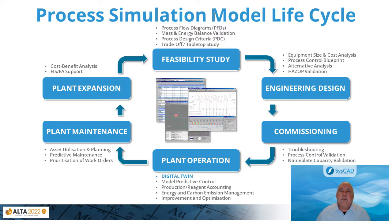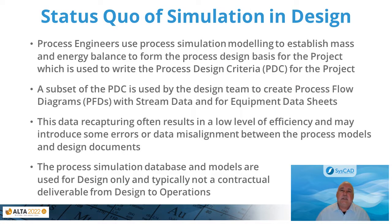For this presentation, we will group the process simulation lifecycle phases into design and operations. The status quo of simulation in design: process engineers use process simulation modeling to establish mass and energy balance, which is used to write the process design criteria for the project. A subset of the process design criteria is typically used by the design team to create process flow diagrams with stream data and equipment data sheets. Multiple data recapturing often results in a low level of efficiency and may introduce errors or design misalignment between the process models and design documents. The process simulation database and models are typically used for design only and are not a contractual deliverable from design to operations.